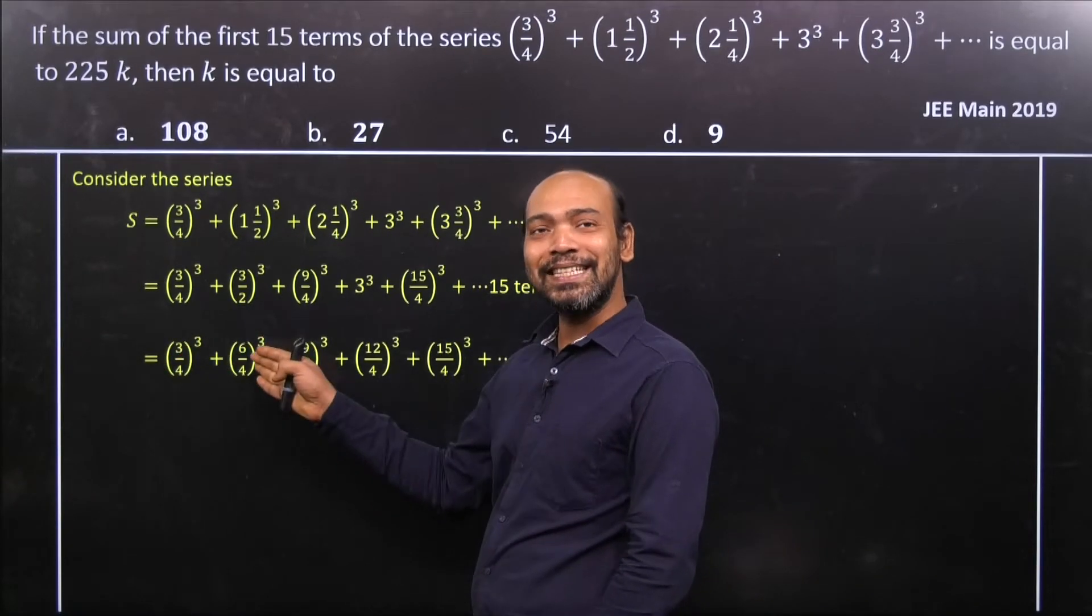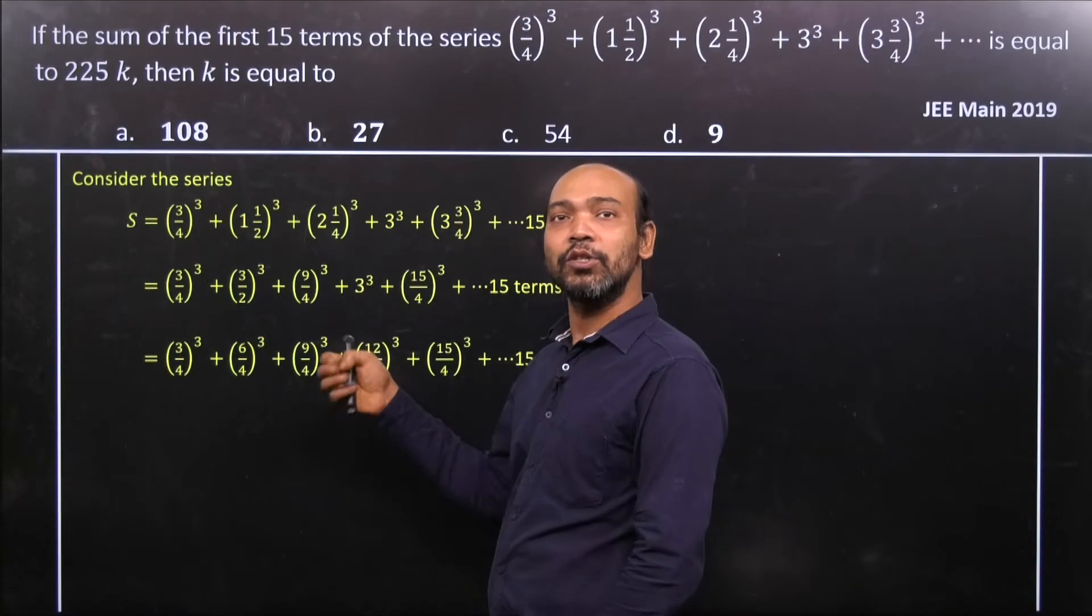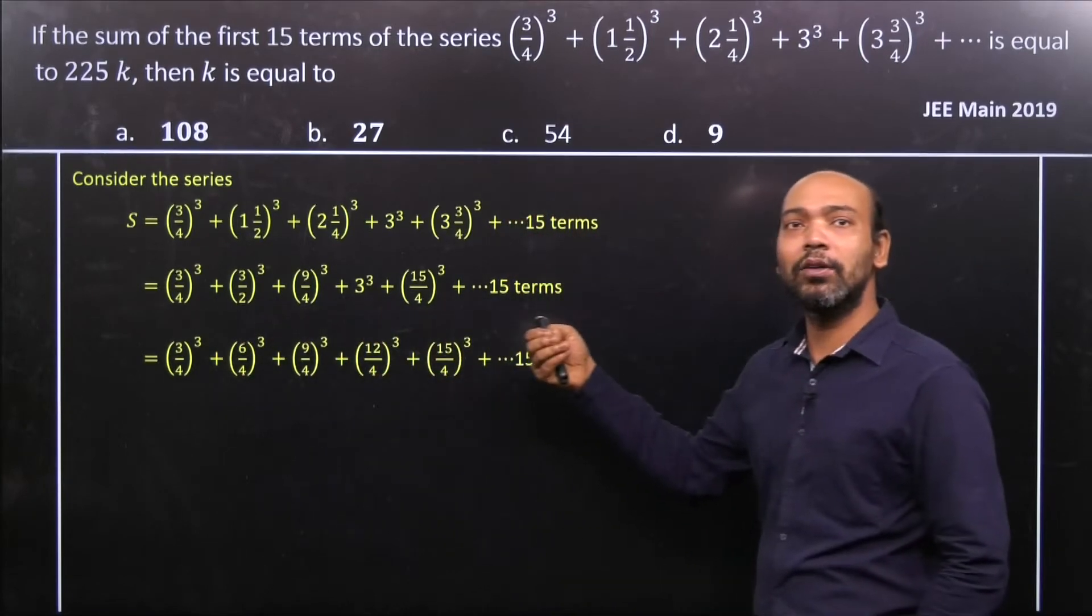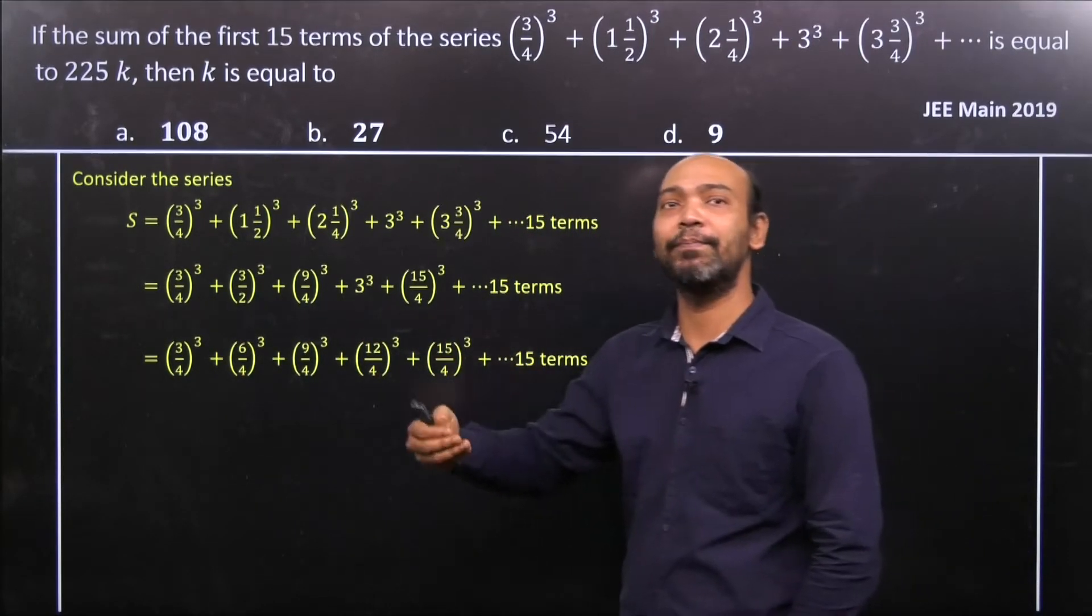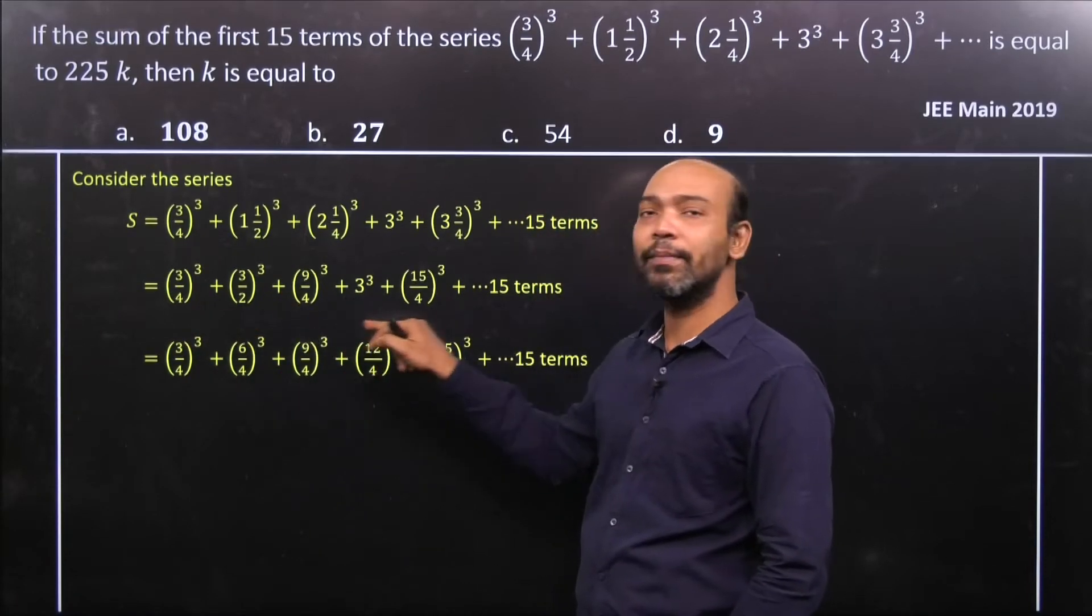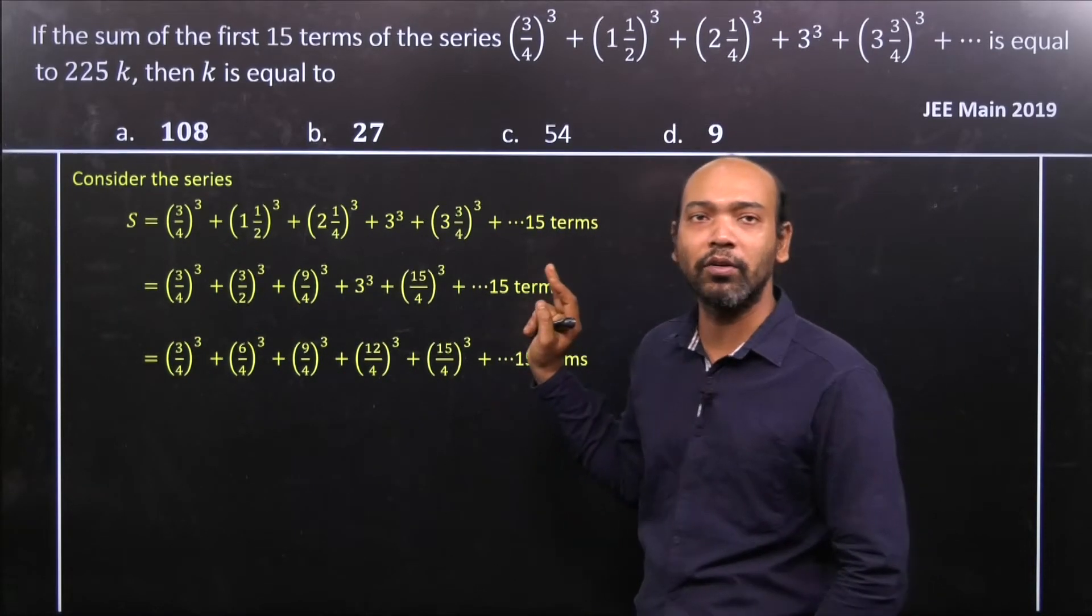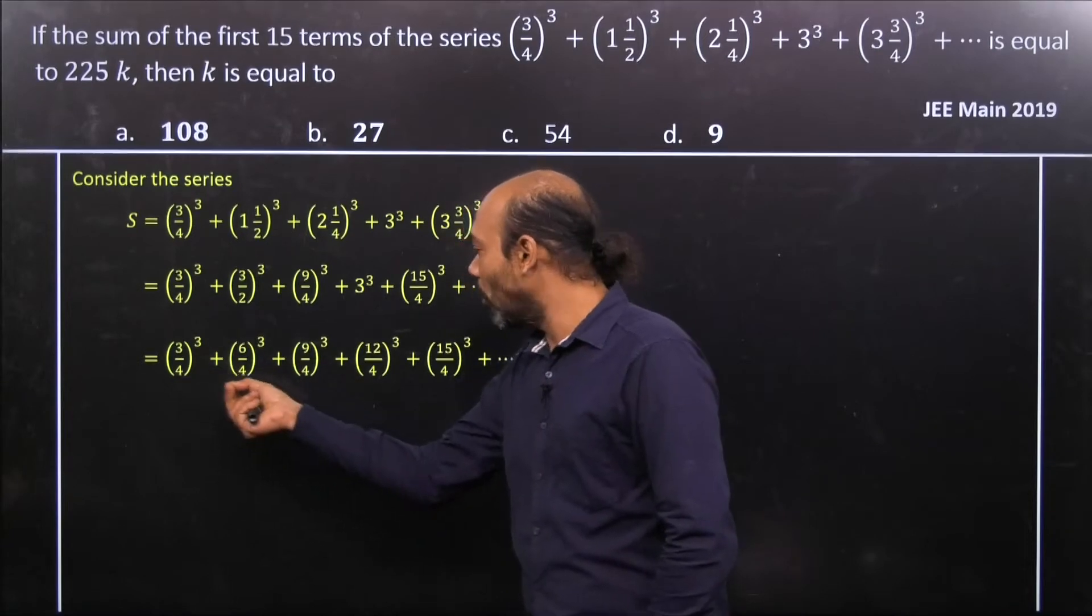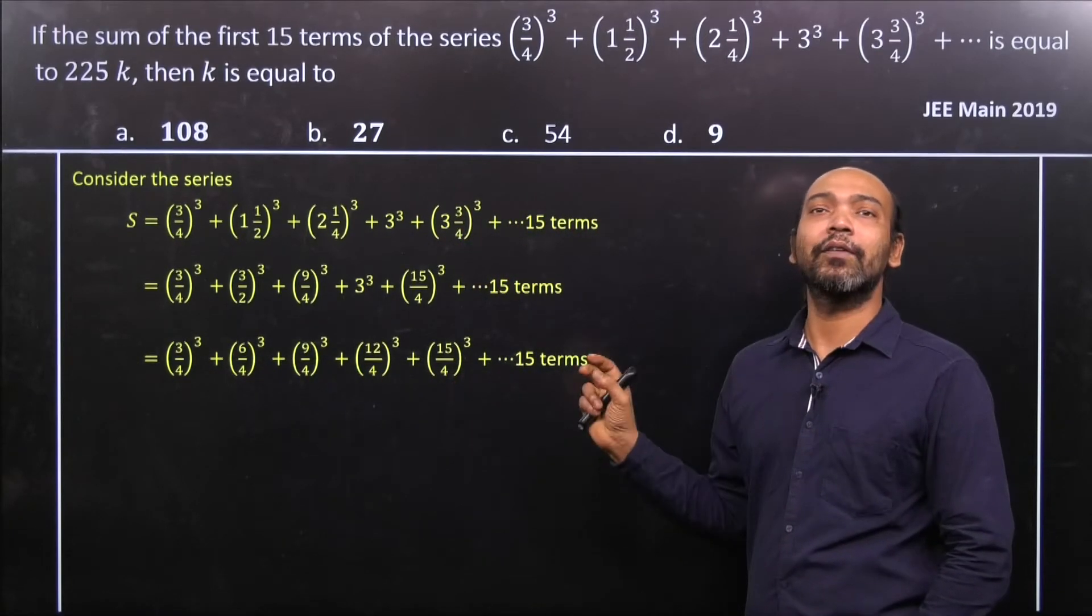For r equal to 1 we get the first term, second term and so on, for r equal to 1, 2, 3 and so on. In all cases my denominator is 4. Therefore this can be easily written in this form.